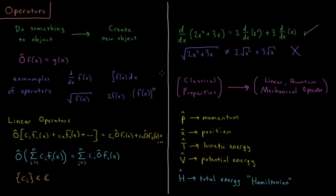The reason we care about linear operators is that classical physics properties — any kind of property you can measure — are related in quantum mechanics to linear quantum mechanical operators. There will be specific operators for momentum, position in the x direction, kinetic energy, and potential energy, but most importantly there will be the operator for total energy, which is called the Hamiltonian operator. These operators act on a function and give a new function, represented by letters with hats. Classical properties are related to quantum mechanical operators, and every property has an operator — most importantly the Hamiltonian.